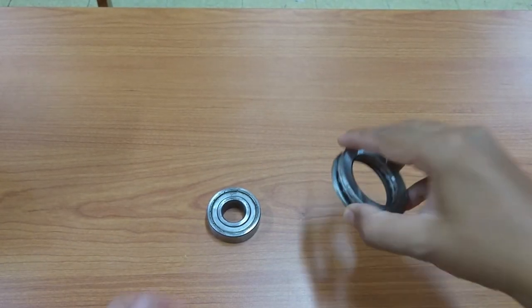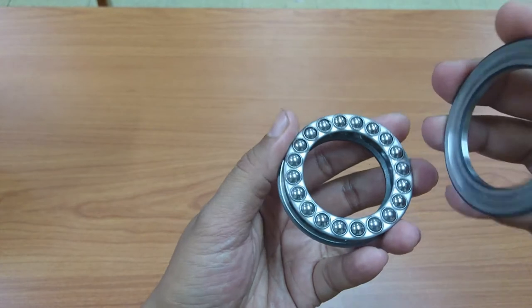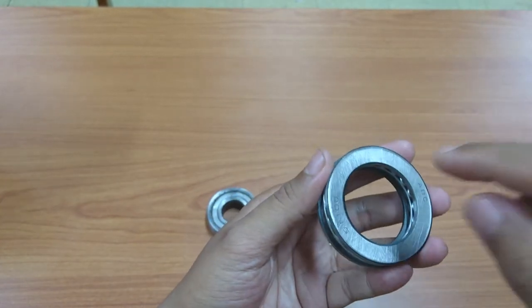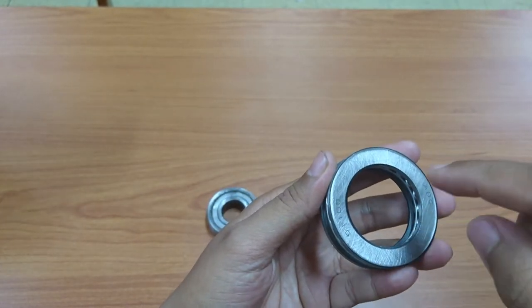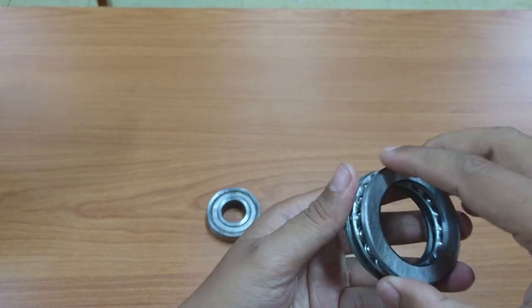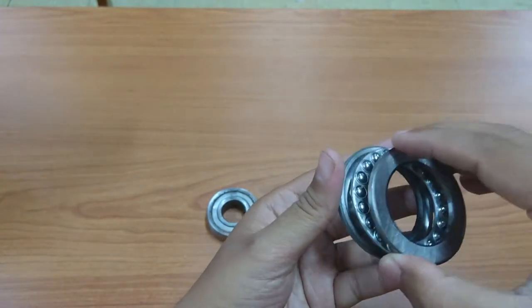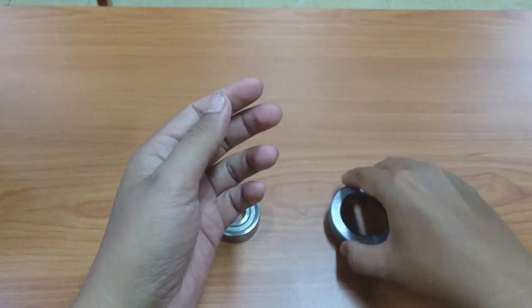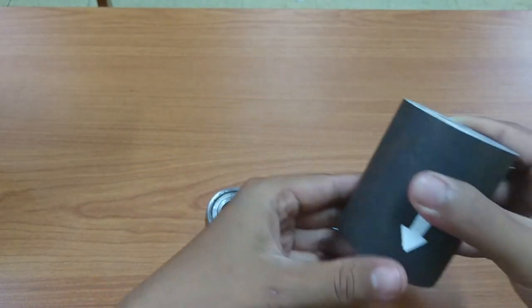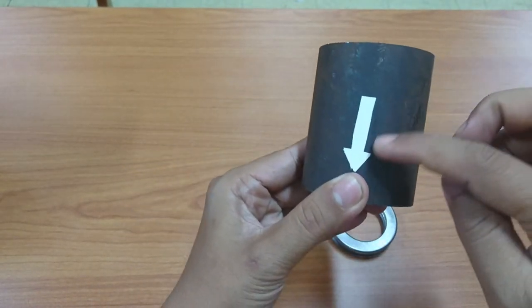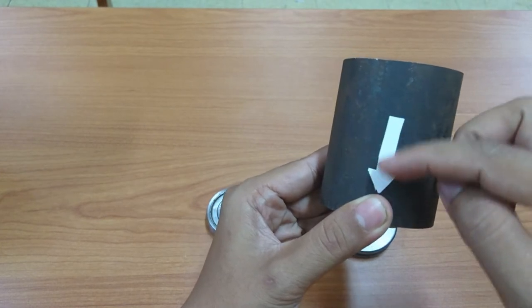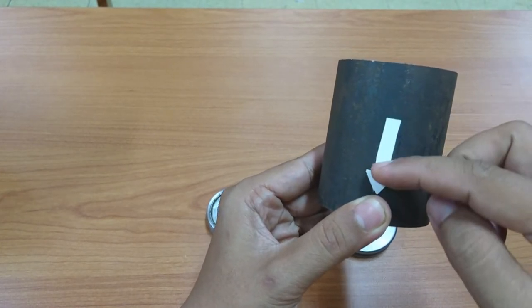This is the bearing that mostly handles axial or thrust load. You see that the structure? I have a shaft like this. This is the direction of the load. It is a thrust. It is axial, not radial.